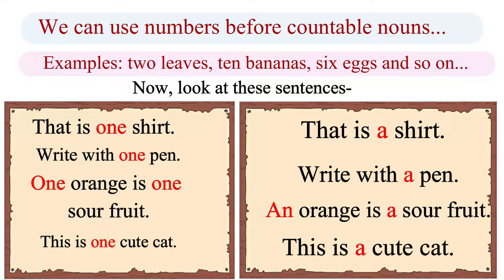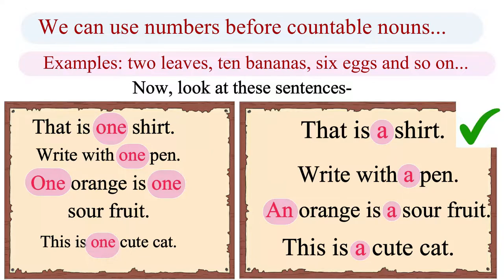Did you notice that we have replaced one with a or an in each of these sentences? And now, these sentences seem to be okay. That is because when we talk about one object, we generally prefer to use a or an in place of one.